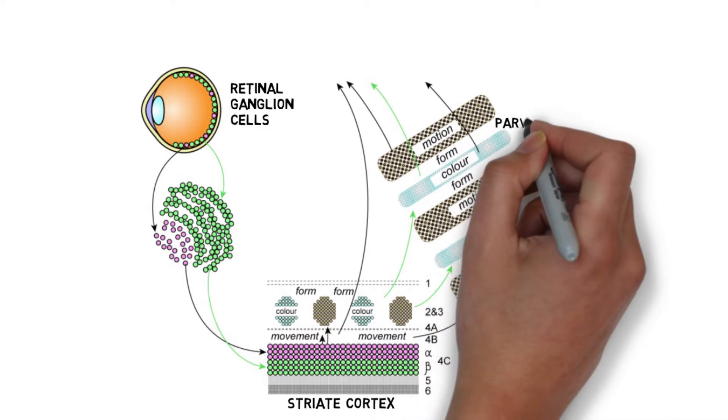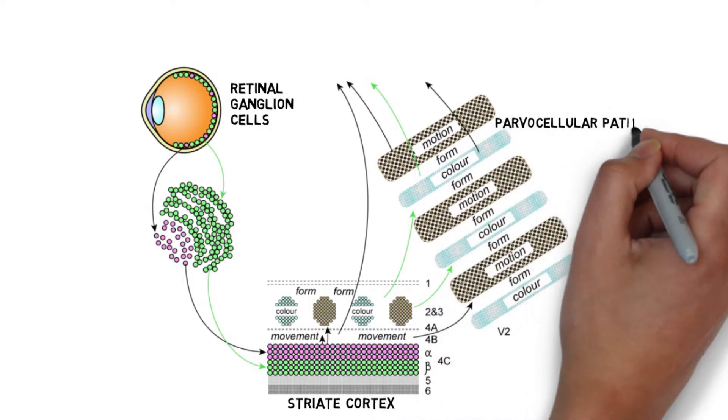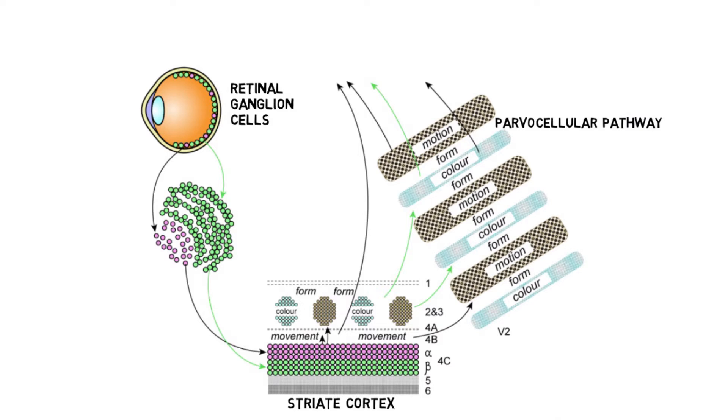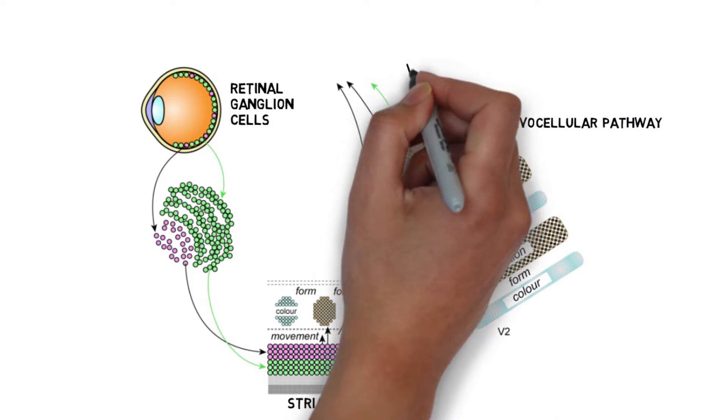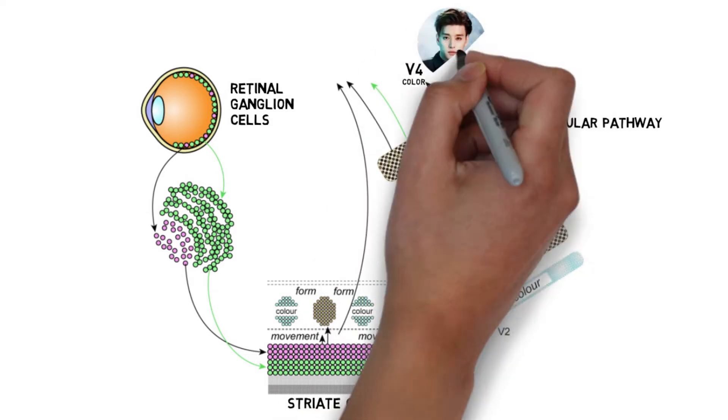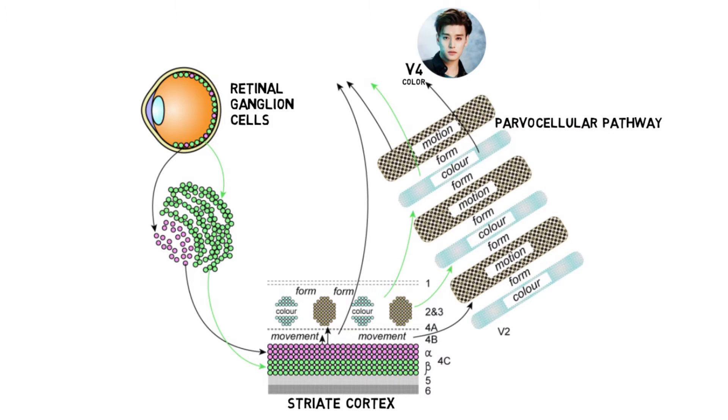Inputs to the ventral pathway are primarily parvocellular in origin, and not surprisingly, extrastriate areas in this pathway are responsible for shape detection, color perception, and overall object recognition, for example face recognition.